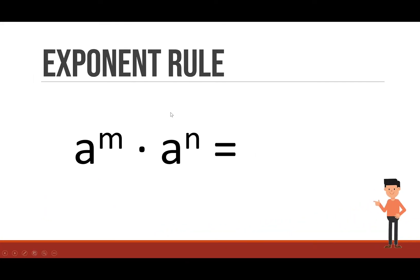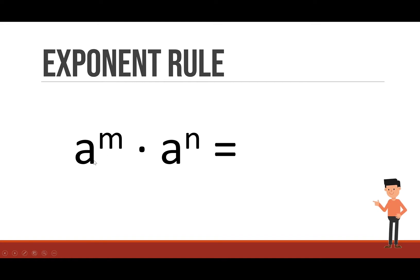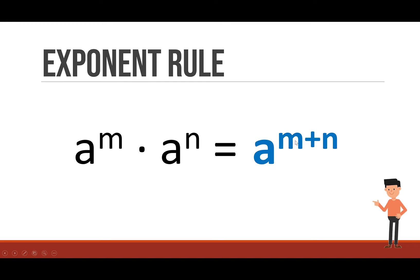Here's the exponent rule. If you have two of the same bases — like a and a — and you're multiplying them, so a to the m power times a to the n power, what you're going to do is add the exponents if the bases are the same. So this is going to be a to the m plus n. Confused? Don't worry, I'll explain.